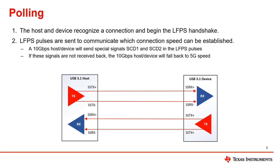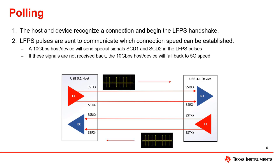Polling is the second state in the enumeration process. It begins with the low-frequency periodic signal handshake, or LFPS for short. This is where the USB host and device ports send LFPS pulses to each other. These pulses communicate the speed that each port is capable of, whether that is 5 gig or 10 gig. If one port is capable of 10 gigabits per second but the other is only capable of 5 gigabits per second, the 10 gig port will switch to 5 gig signaling during this handshake process.